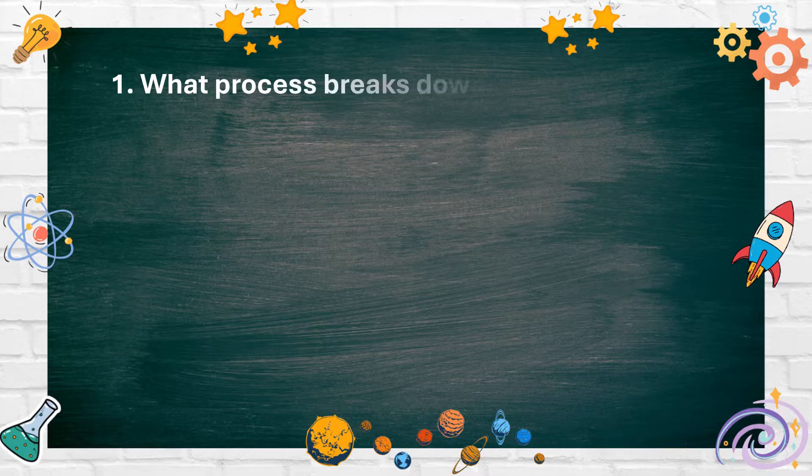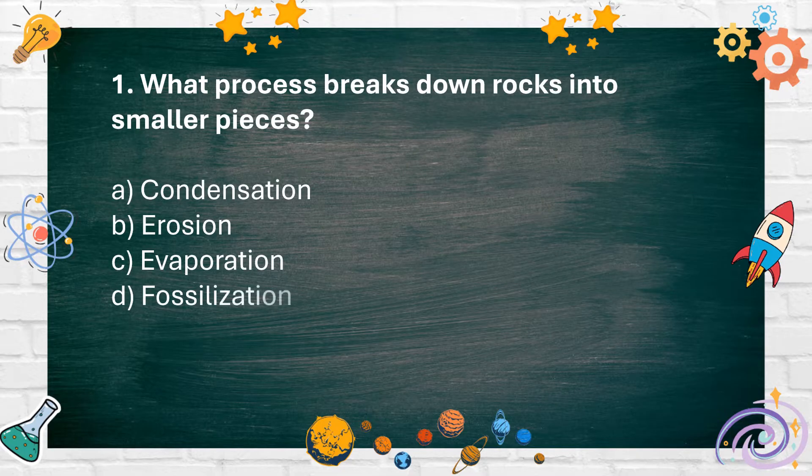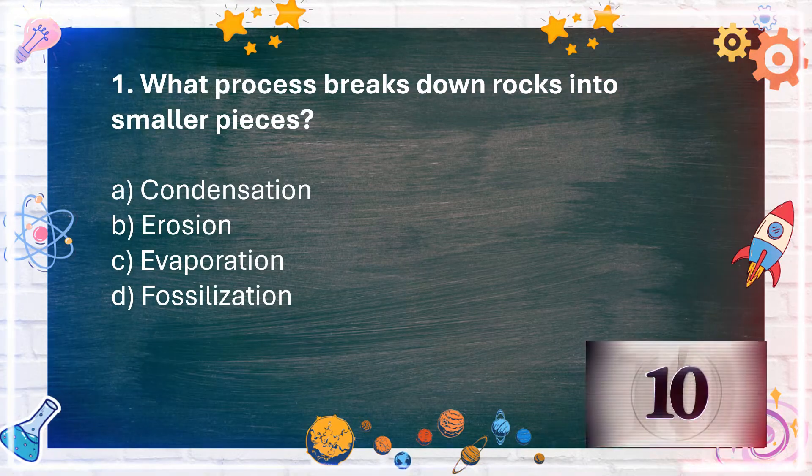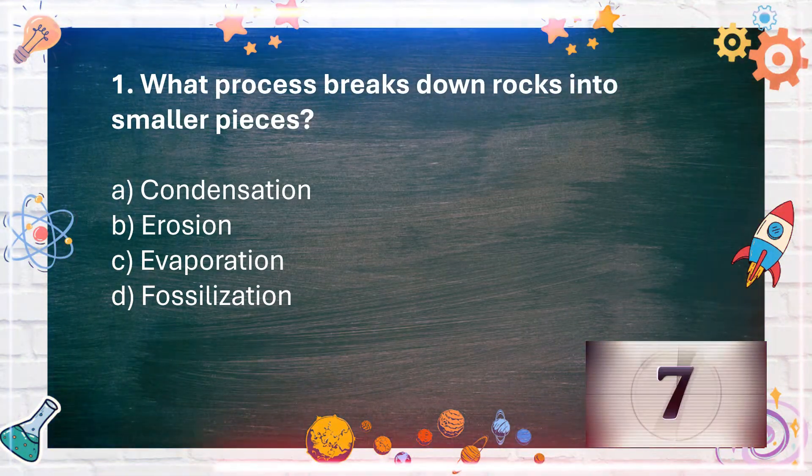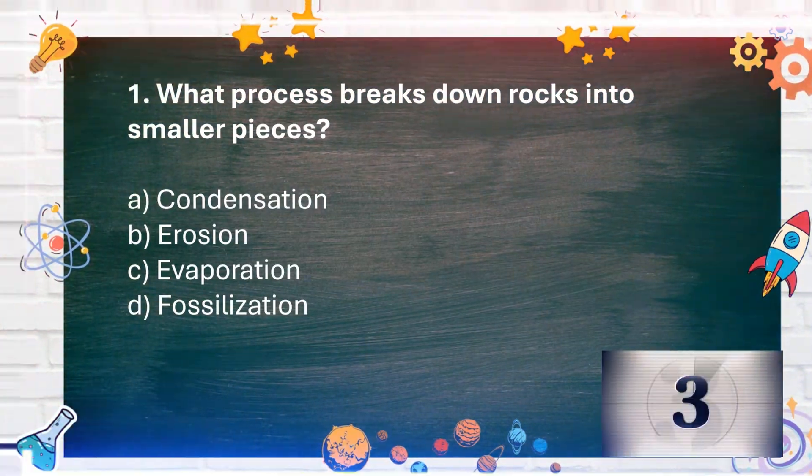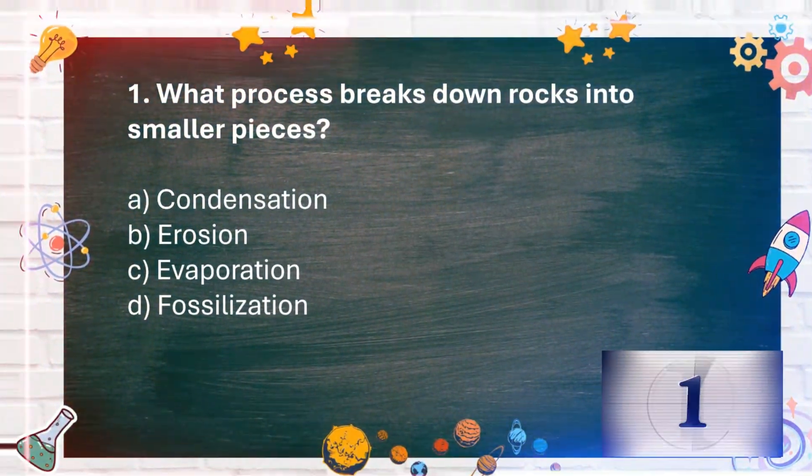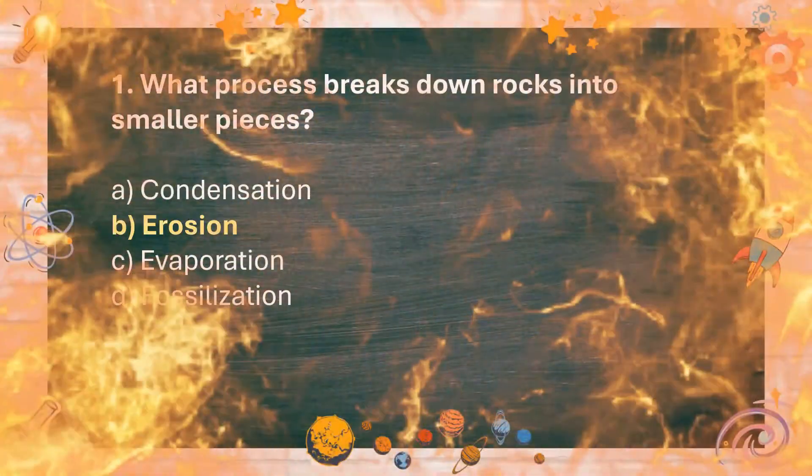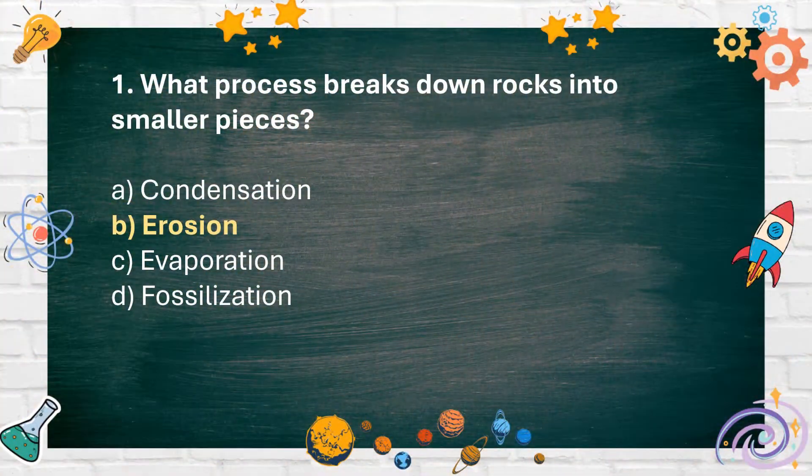Number 1: What process breaks down rocks into smaller pieces? A. Condensation, B. Erosion, C. Evaporation, D. Fossilization. The answer is B. Erosion.